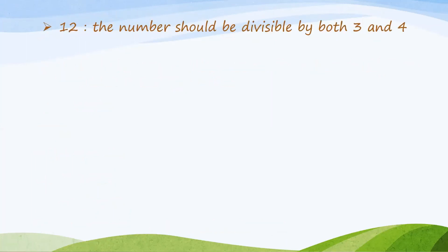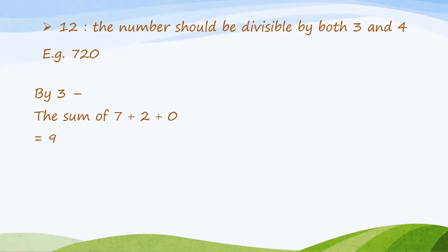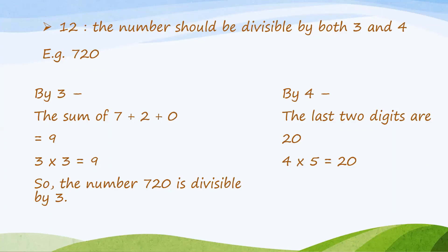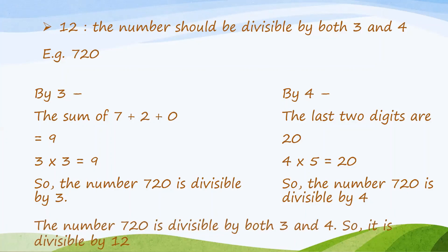The Divisibility Rule of 12 says that the number should be divisible by both 3 and 4. For example, the number 720: first, we check divisibility by 3 — the sum of 7 plus 2 plus 0 is 9, and 3 multiplied by 3 is 9, so 720 is divisible by 3. Next, the last two digits are 20 and 4 times 5 is 20, so 720 is divisible by 4. Since 720 is divisible by both 3 and 4, it is divisible by 12.